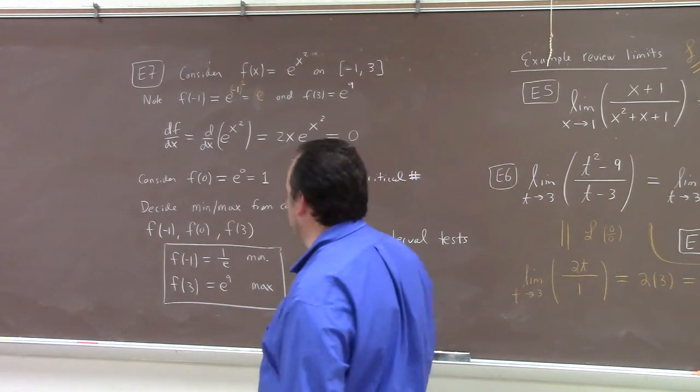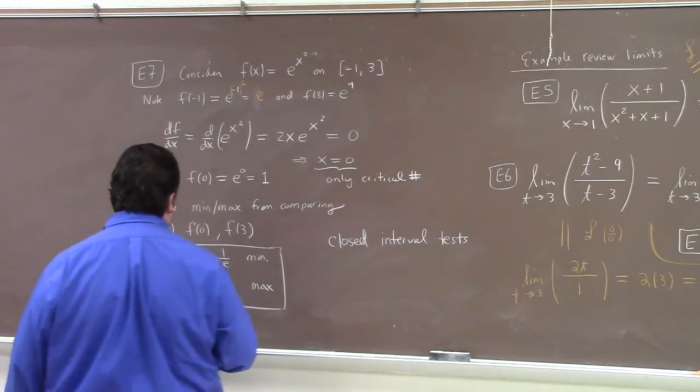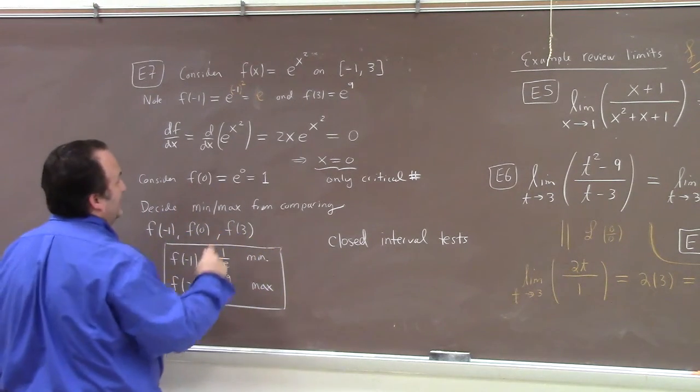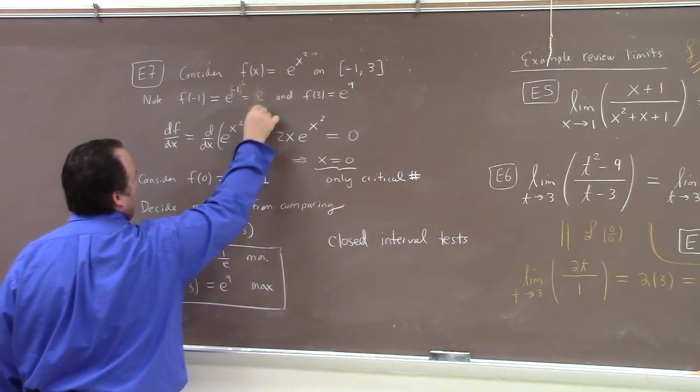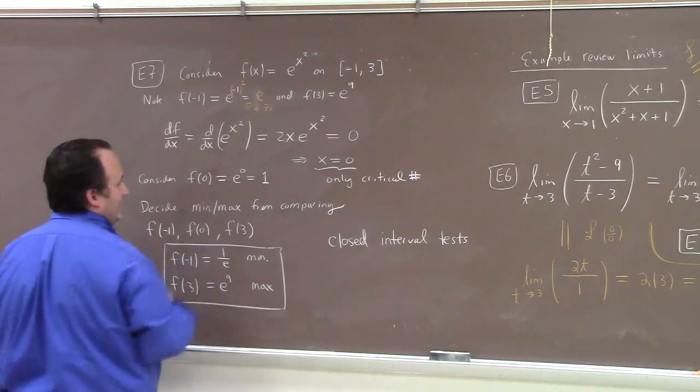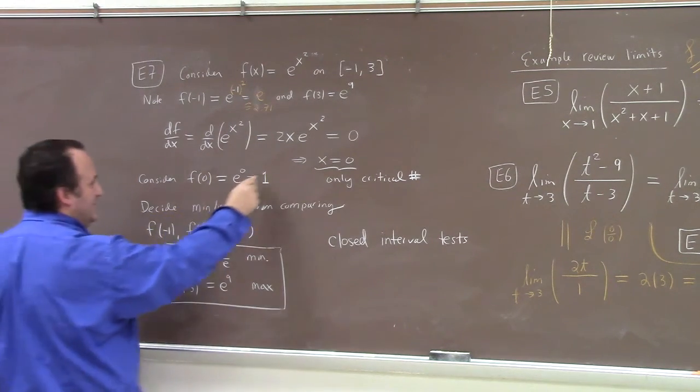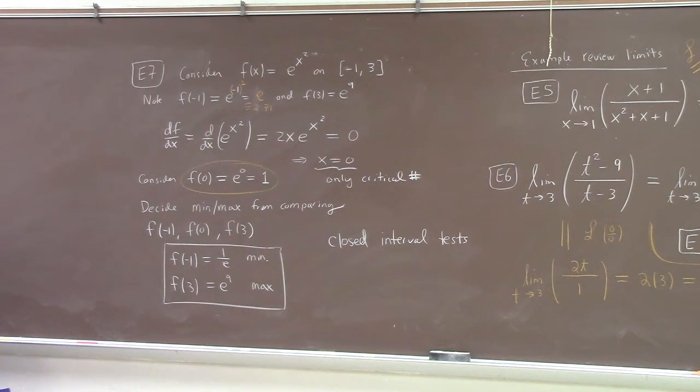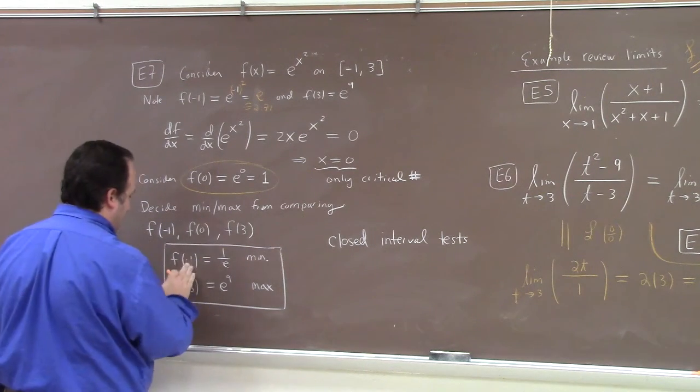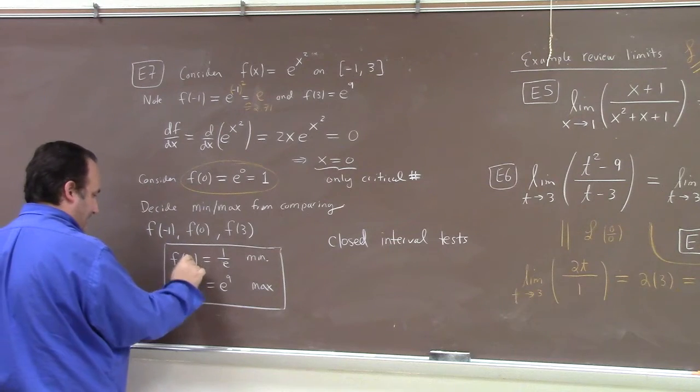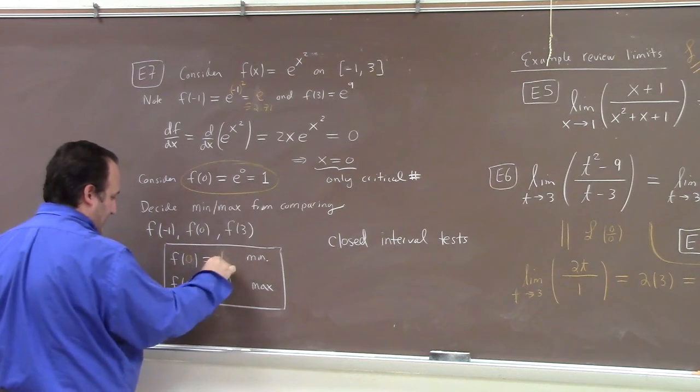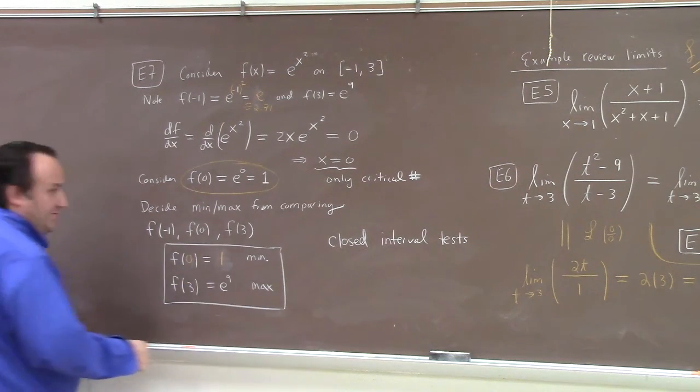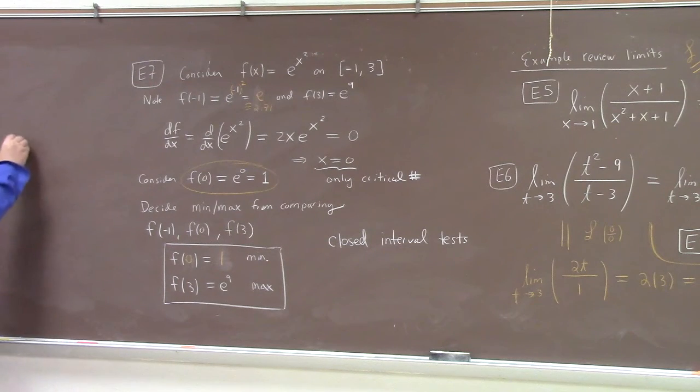I think everything else is okay, but that is a pretty significant thing because that means that e is about, you know, 2.71-ish, right? So actually this one was the minimum. That one was the minimum. So f of zero equal to one is the minimum. And of course, that actually makes sense if you graph this thing.